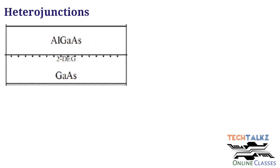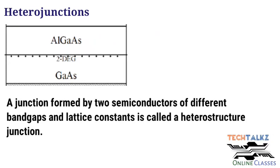So what do we mean by semiconductor heterojunctions? A junction formed by two semiconductors of different bandgaps and lattice constants is called a heterostructure junction. One example is the AlGaAs/GaAs heterojunction — aluminium gallium arsenide and gallium arsenide.